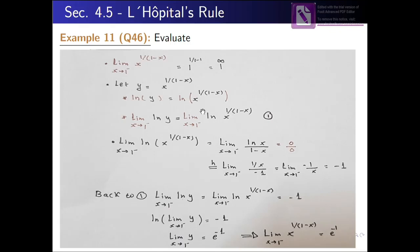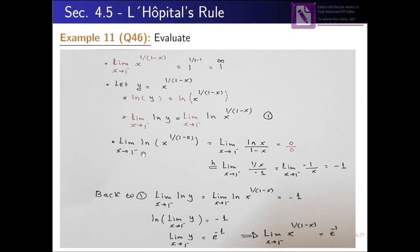Then we add the limit for both sides when x approaches 1 from the left. Taking this part and evaluating the limit of ln(x^(1/(1−x))) when x→1⁻: using the properties of ln, we bring the exponent in front, giving us (1/(1−x)) · ln(x), which equals ln(x)/(1−x).